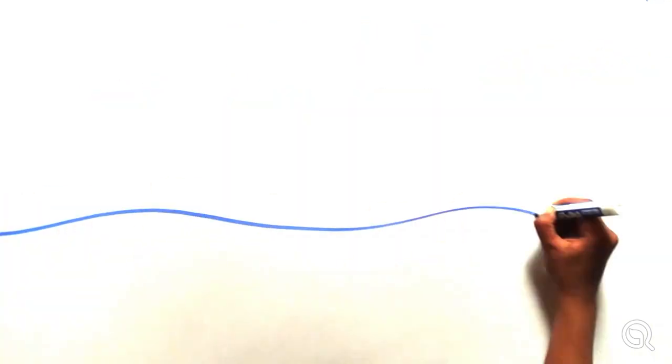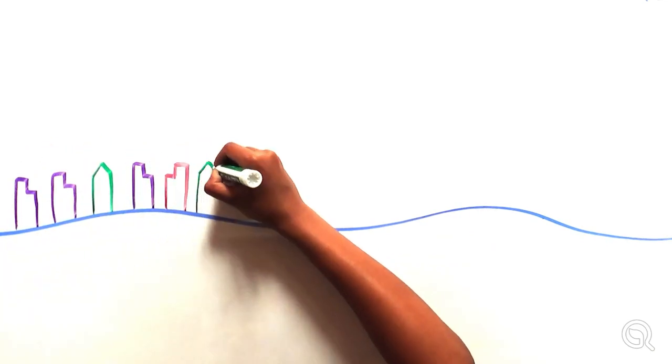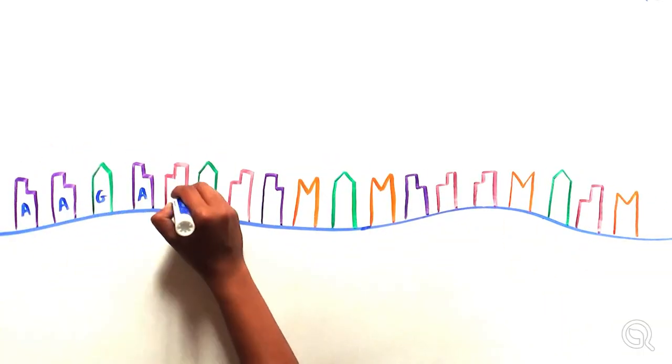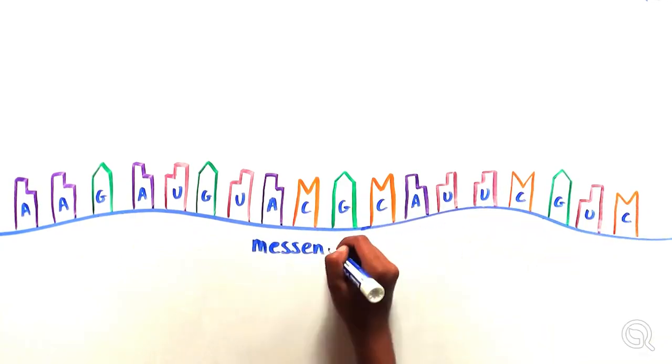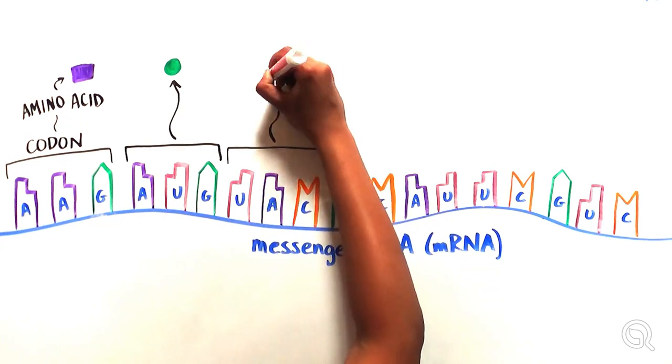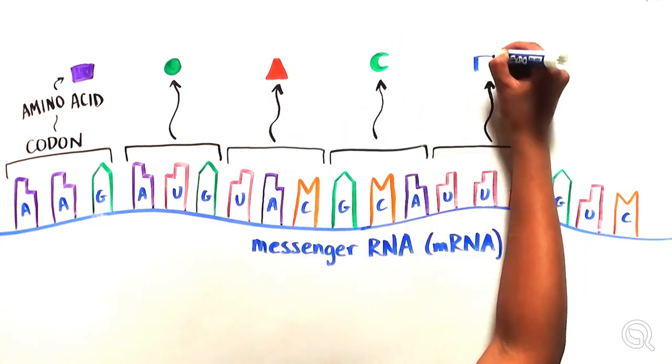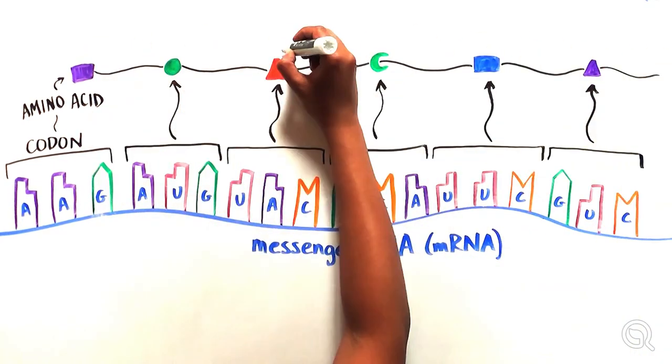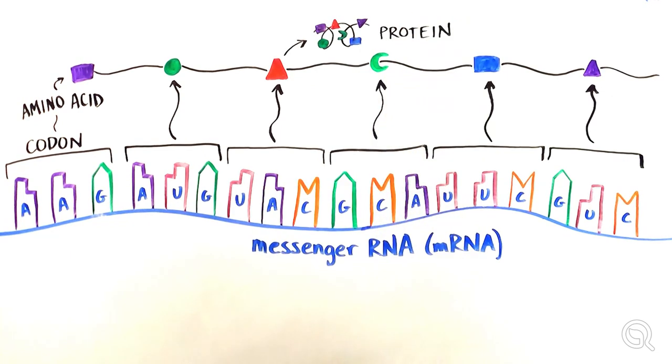A specific type of RNA called messenger RNA or mRNA is responsible for providing instructions to make proteins. A group of three RNA bases, known as a codon, encode for specific amino acids, and multiple amino acids strung together make a protein.